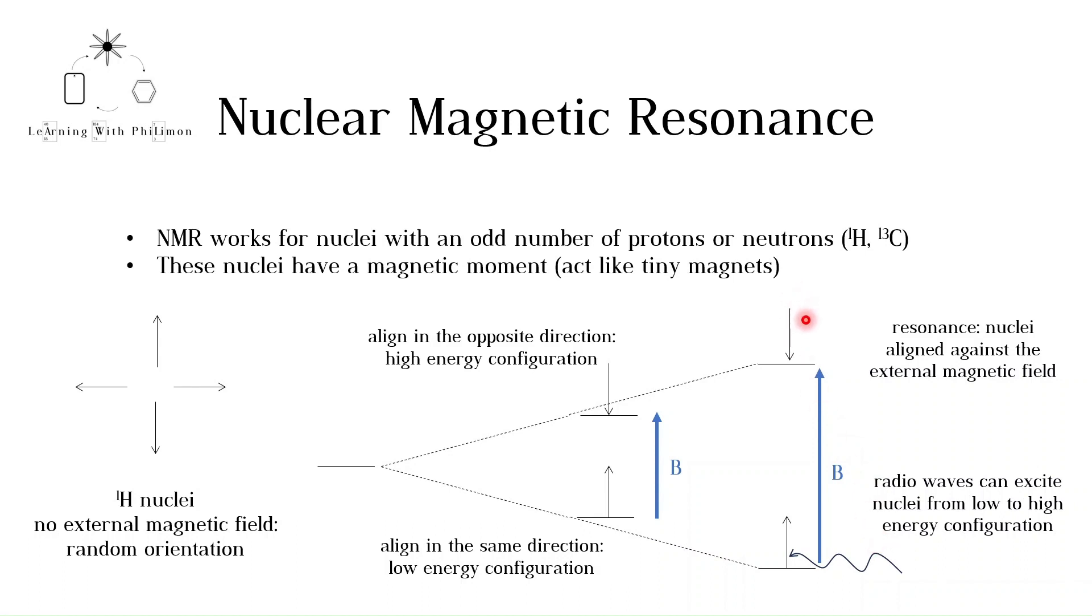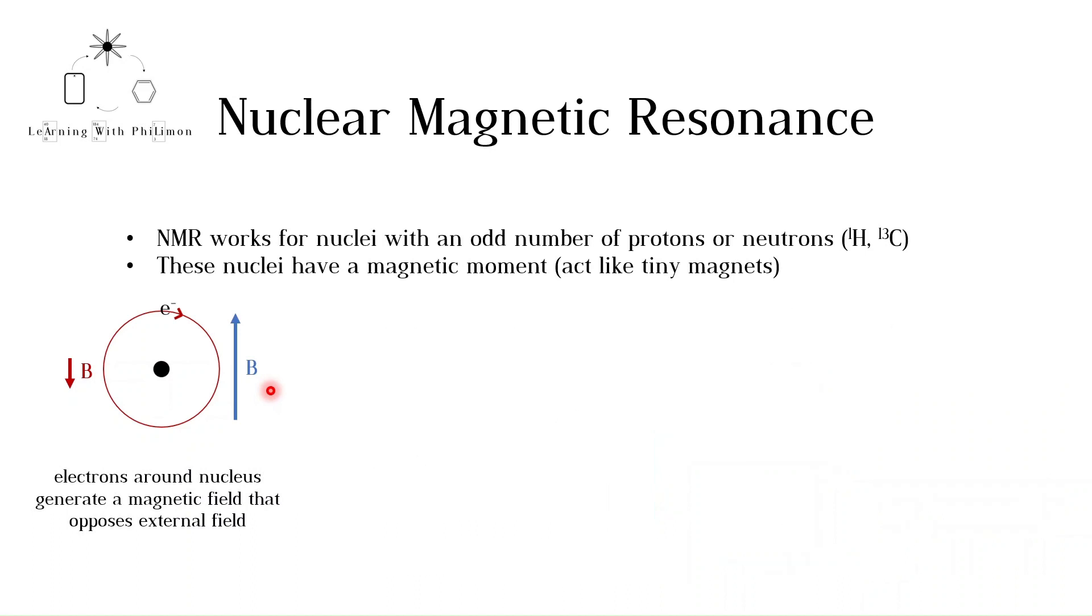So far we have only talked about nuclei, but let's consider the role of electrons around the nuclei. As electrons spin and orbit the nucleus, they produce a magnetic field that opposes the external applied magnetic field. The magnetic field of the electrons shields the nucleus from the applied external magnetic field. As a result, the gap between the two orientations decreases, and a smaller frequency is required to achieve resonance.